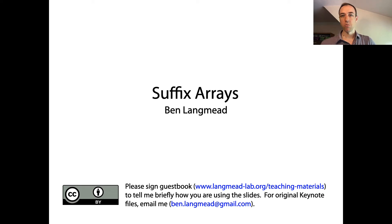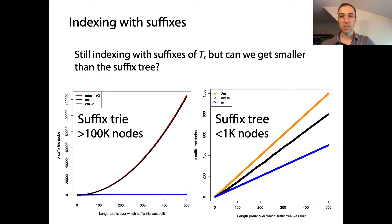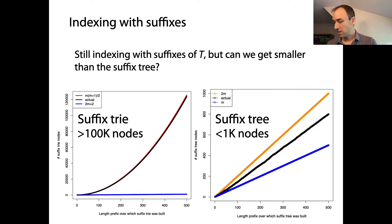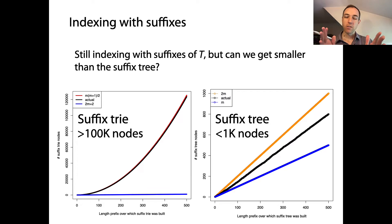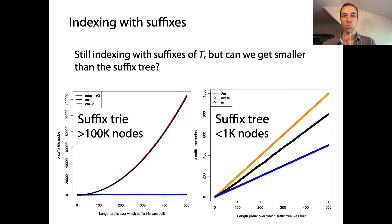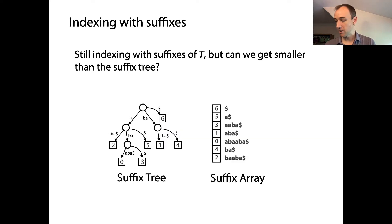We're ready to make the next stop in our journey through suffix indexes. We've just seen the suffix tree, and we like the suffix tree in terms of space required because its big O space was an improvement over the suffix trie. Whereas the suffix trie required a quadratic number of nodes and edges, the suffix tree requires only a linear number. Today we're going to see something smaller even than the suffix tree in practice — the suffix array.